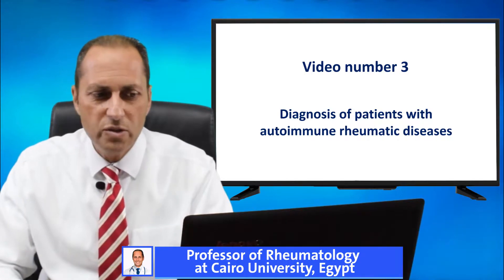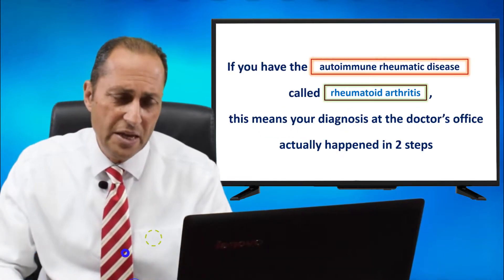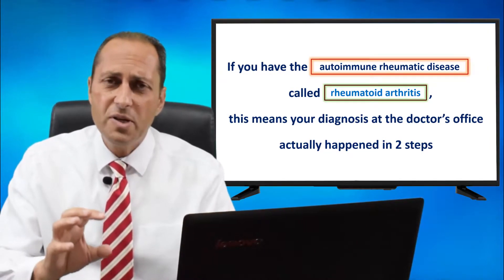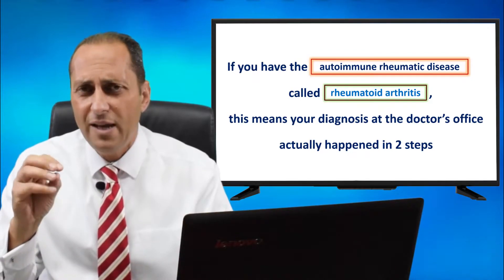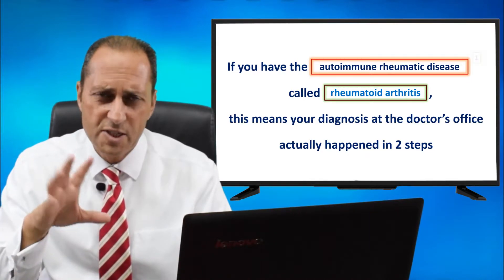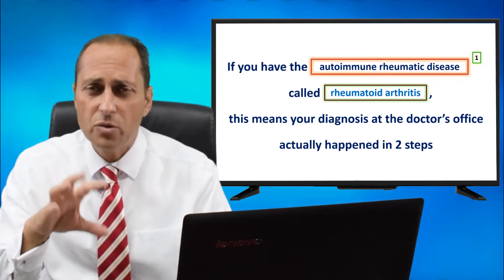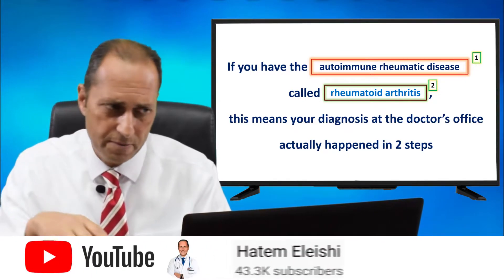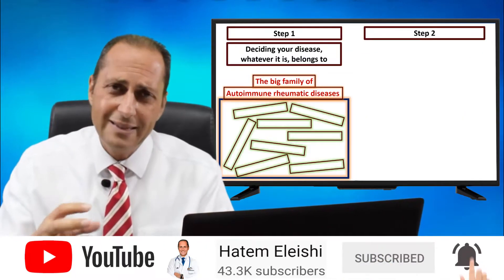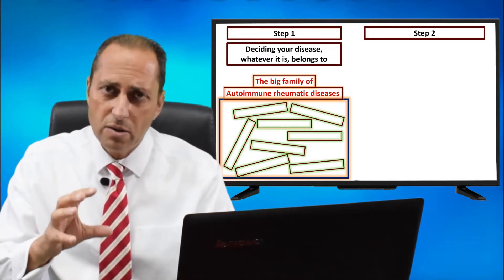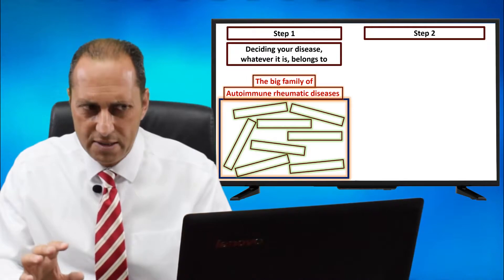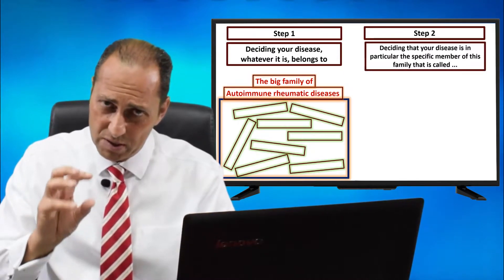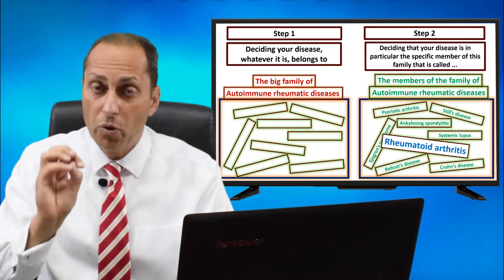How do doctors diagnose a patient with an autoimmune rheumatic disease? If you have the autoimmune rheumatic disease called rheumatoid arthritis, for example, your diagnosis at the doctor's office actually happened in two steps. Step one: you were diagnosed as having an autoimmune rheumatic disease in general. Step two: you were diagnosed as having rheumatoid arthritis in particular.